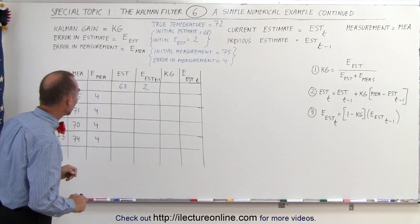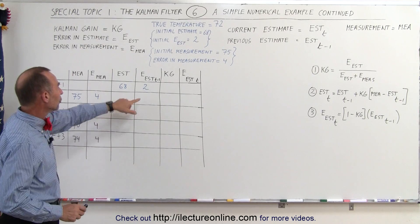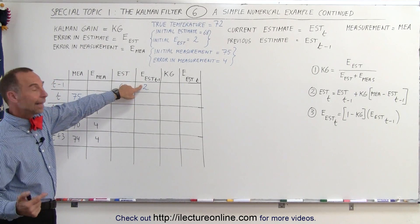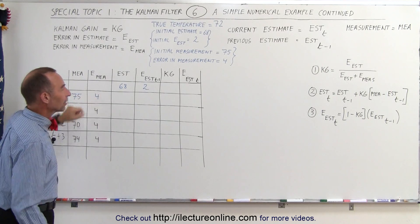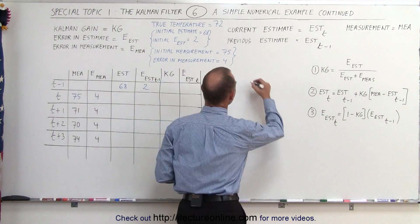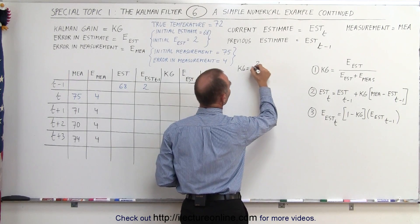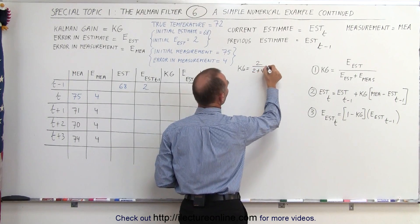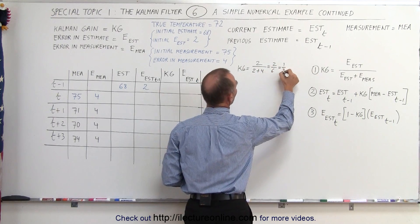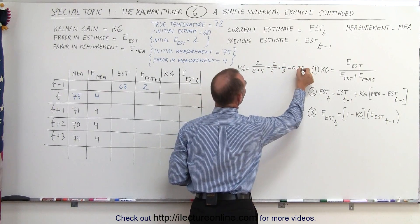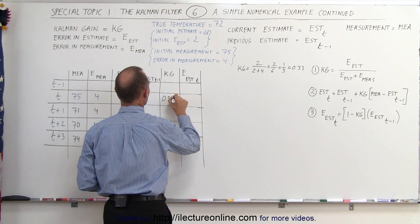The first thing we want to do is calculate the Kalman gain. We're going to do that by using the estimate error of 2 and the error in the measured value of 4. So the first Kalman gain value is going to be equal to 2 divided by 2 plus 4, which is equal to 2 sixths, which is one-third, which is 0.33, and we can put that right here: 0.33.